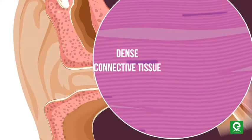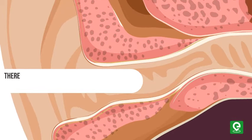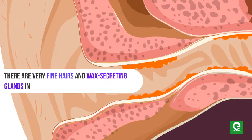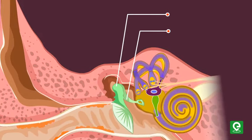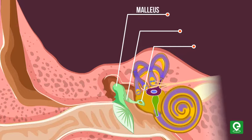There are very fine hairs and wax-secreting glands in the skin of the pinna and the meatus. The middle ear contains three ossicles called malleus, incus, and stapes, attached to each other in a chain-like fashion.